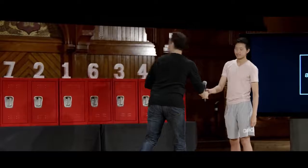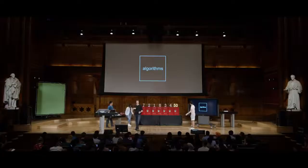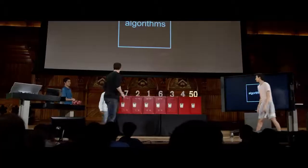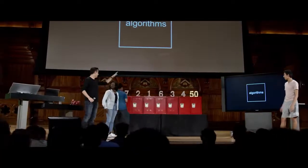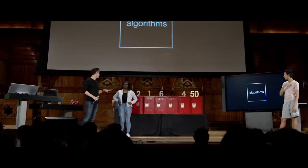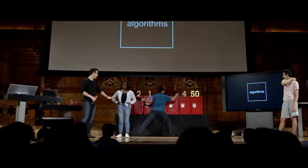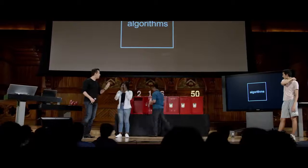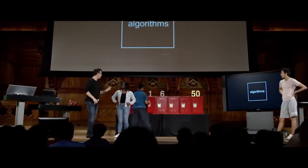Not knowing if they're sorted — and them not even being sorted — means that is the best you can do: look at all of the doors to find the number in question. Maybe you could have gotten lucky if 50 were at the start, but in the worst case Eric was going to have to search all of the boxes. Thank you, Eric. Stay on stage with us.